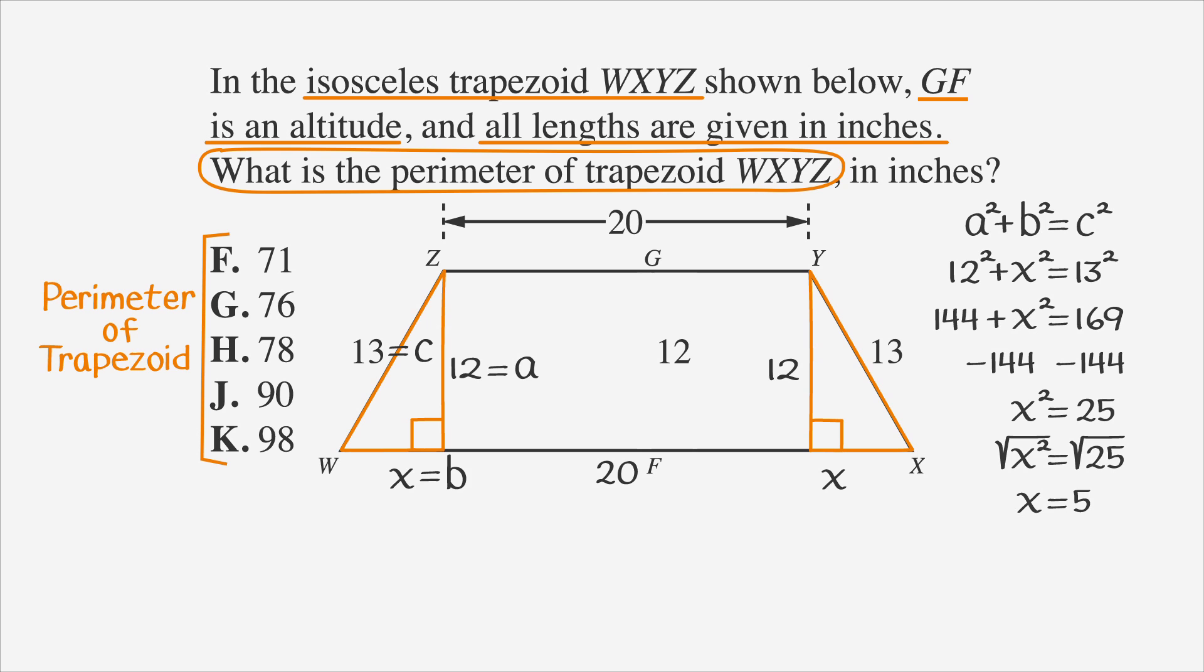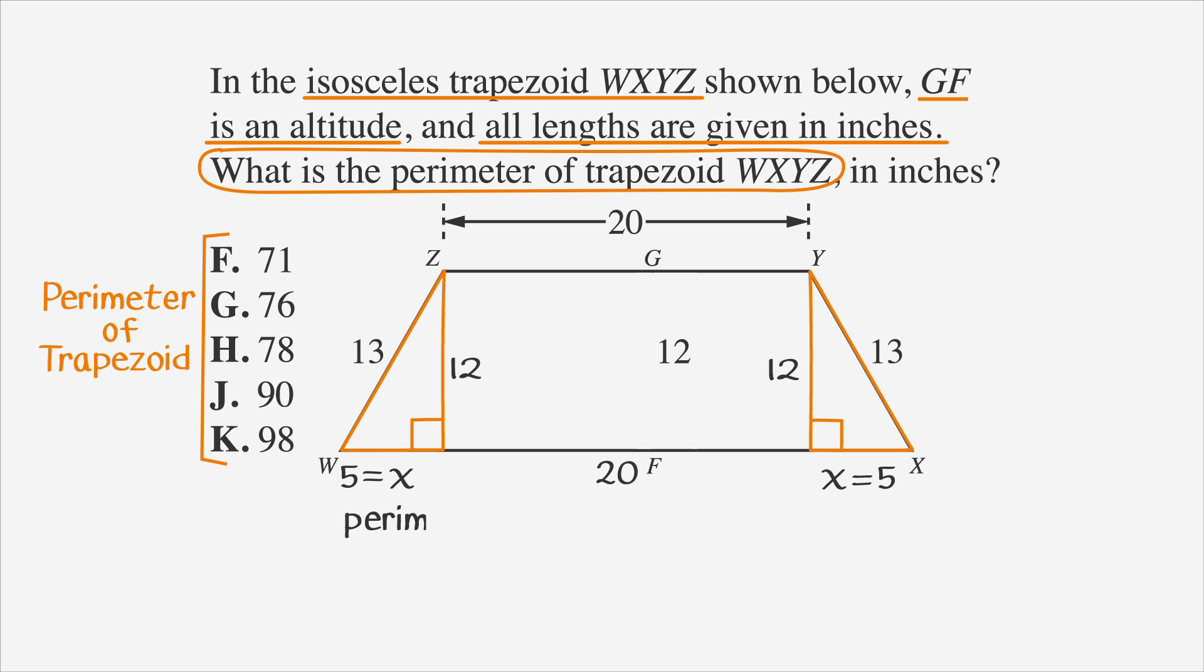So now we can go back to our trapezoid and label X as 5. Since perimeter is just the sum of all the sides, we can just add all the sides. So our perimeter is just 20 plus 20 plus 5 plus 5 plus 13 plus 13, which is the same thing as 2 times 20 plus 2 times 5 plus 2 times 13, which simplifies to 40 plus 10 plus 26, which is 76, which is choice G on the answer choices.